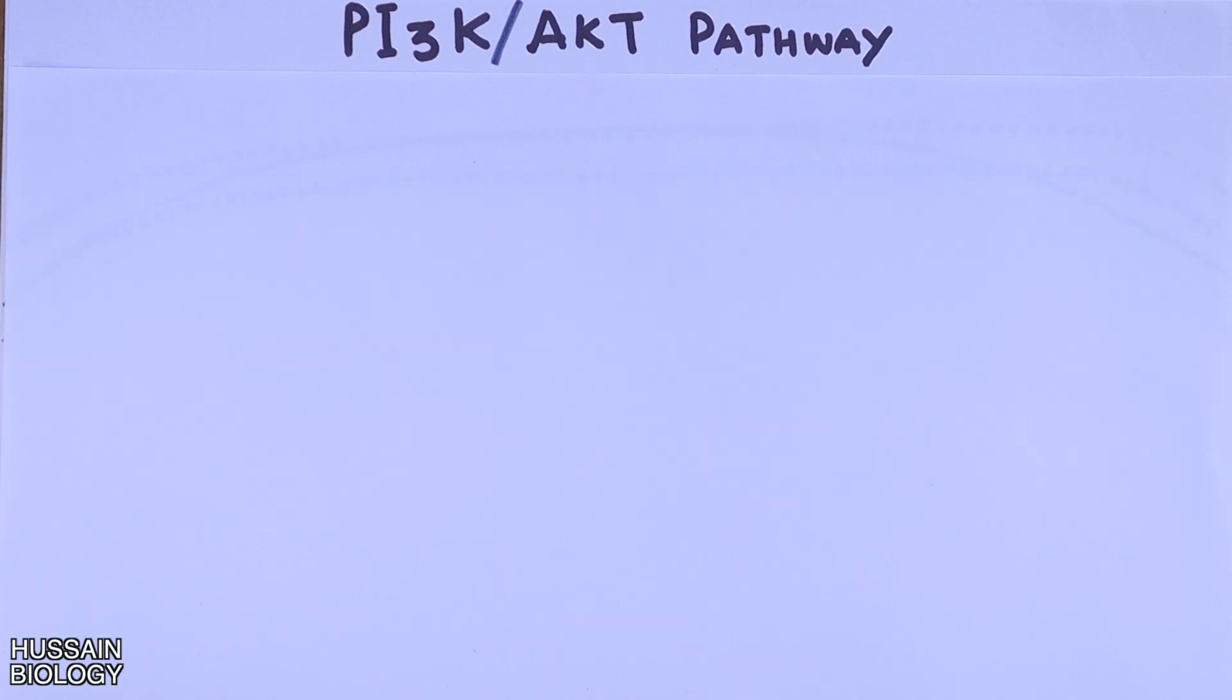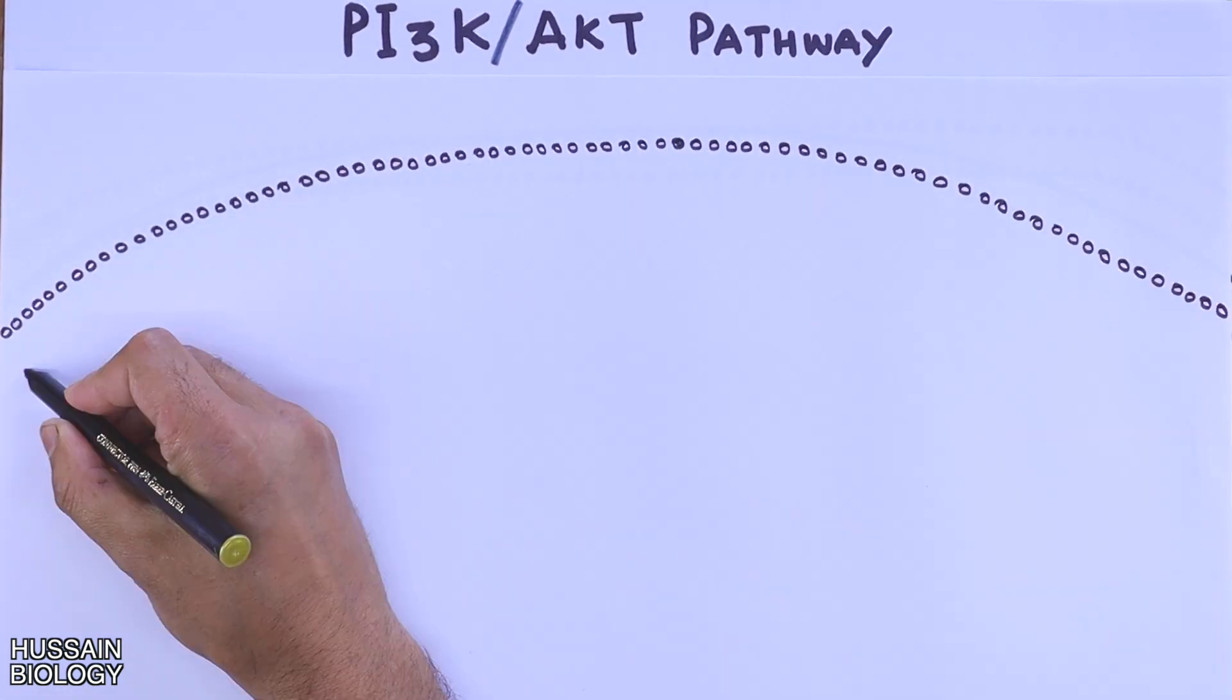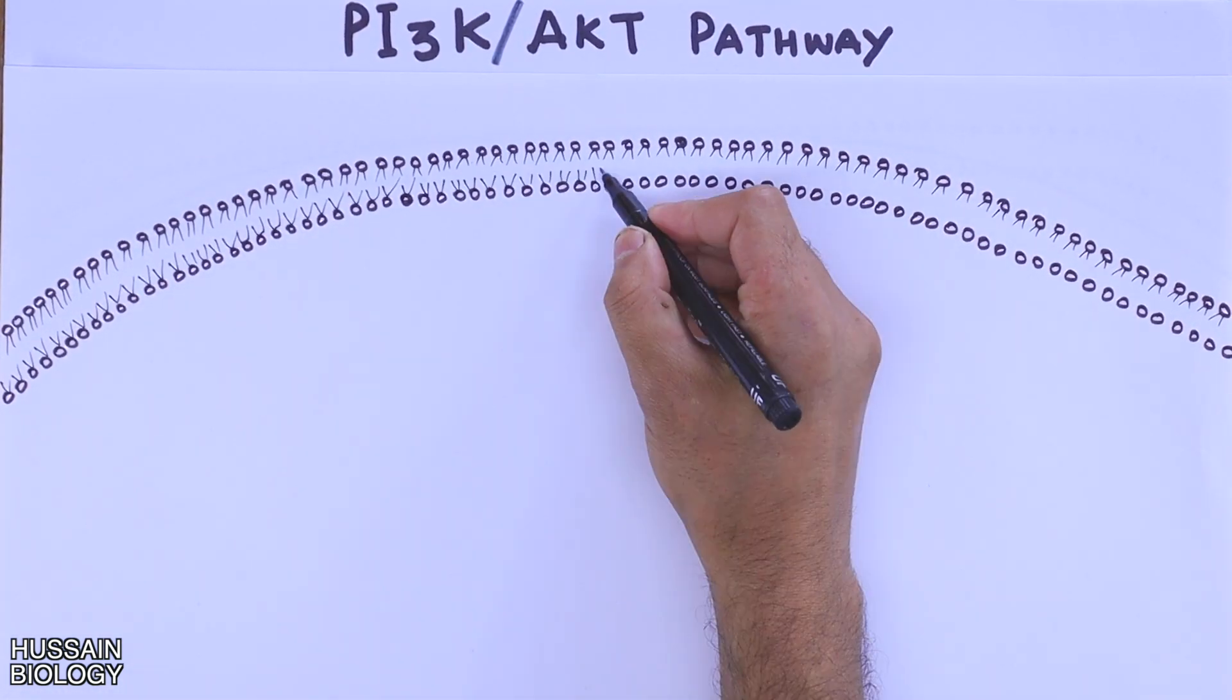Now getting back to our lecture, PI3K AKT PKB molecules regulate diversity of downstream proteins that affect the cell cycle, cell proliferation, cellular metabolism like translation, transcription, and many other cellular activities.